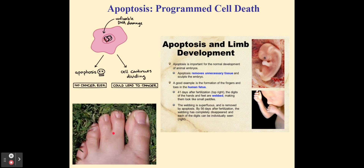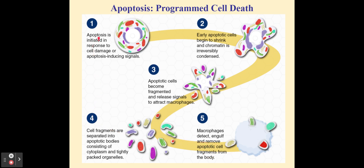A human embryo at 41 days looks like little paddles in its feet and fingers, but by 56 days apoptosis has taken place and there's no more webbing between the digits. Apoptosis is initiated in response to cell damage: signals cause the cells to shrink and condense, the cell membrane comes inward, and gradually the cell becomes fragmented, breaking off into small pieces called apoptotic bodies. Macrophages then engulf all those cell fragments and digest them by phagocytosis, a form of active transport that requires ATP — that's how your body cleans up the fragmented cell parts.